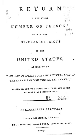Race and ethnicity in the United States Census, defined by the Federal Office of Management and Budget and the United States Census Bureau, are self-identification data items in which residents choose the race or races with which they most closely identify, and indicate whether or not they are of Hispanic or Latino origin. The racial categories represent a social-political construct and generally reflect a social definition of race recognized in this country.